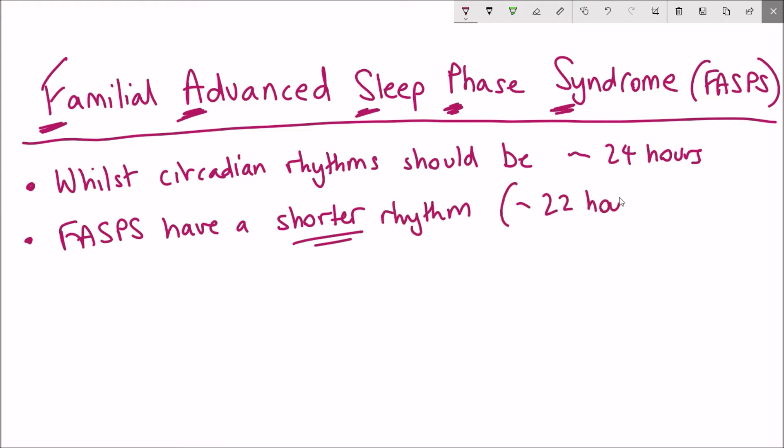While the rhythm should be around 24 hours, people who have FASPS have a circadian rhythm that lasts around 22 hours. But how does this happen and why is this the case?